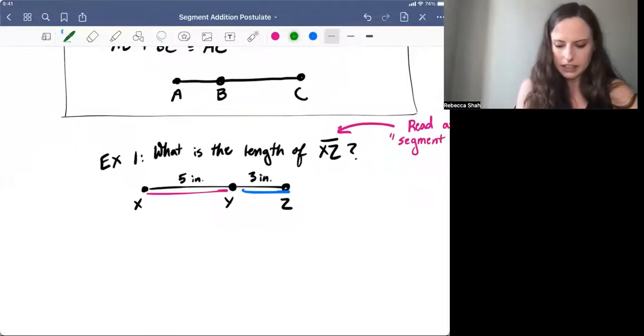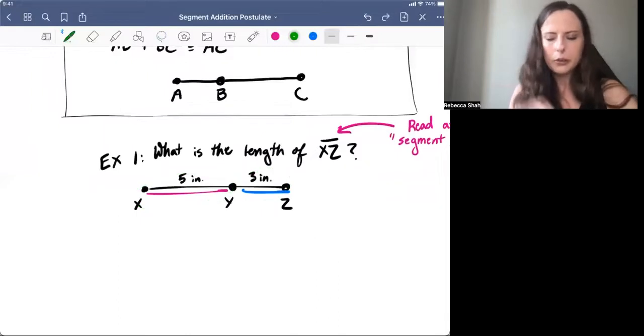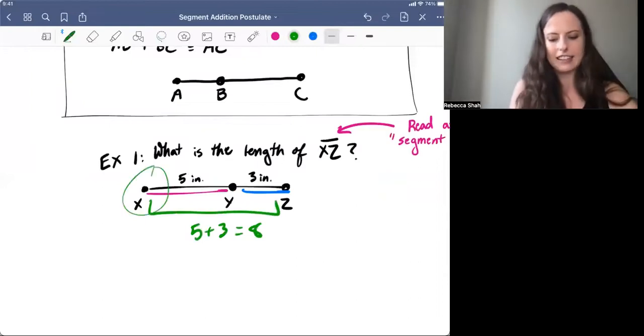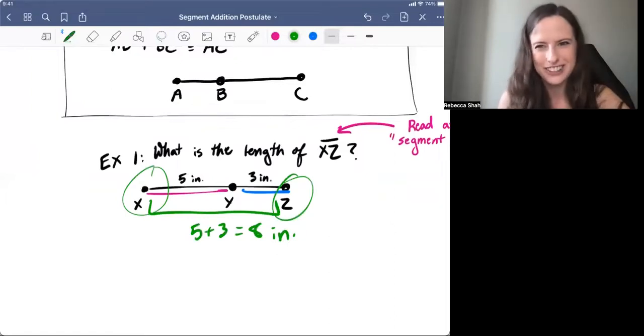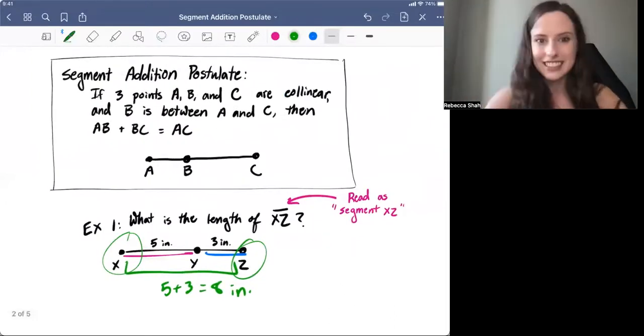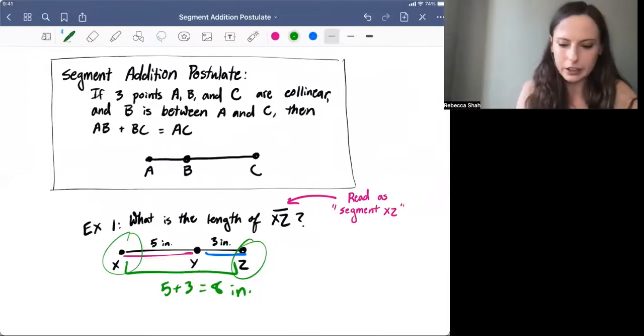Like in this case, five plus this segment here is five, this segment here is three. Well, if you add that together, five plus three is eight. That means that the larger segment has to equal eight inches. That's all the Segment Addition Postulate says, and the only reason that we give it this fancy language is so that we can use it in proofs later on.